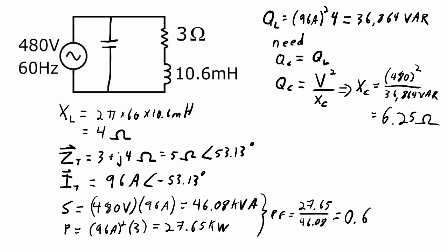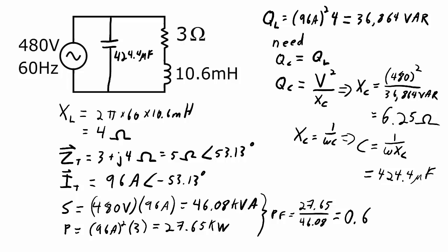That reactance is of course frequency dependent. To find the actual capacitance value, remember XC equals 1 over ωC, which means capacitance equals 1 over ω times XC. Omega is 2π times 60, and the XC needed is 6.25 ohms. Plugging those numbers in gives a value of 424.4 microfarads. Adding a capacitor of 424.4 microfarads means the reactive power it consumes matches the reactive power of the inductor — they balance each other out. Therefore my circuit will only be consuming real power, with no net reactive power. Since there's no reactive power, the power factor equals 1, and I have fully corrected the power factor to its maximum of 1.